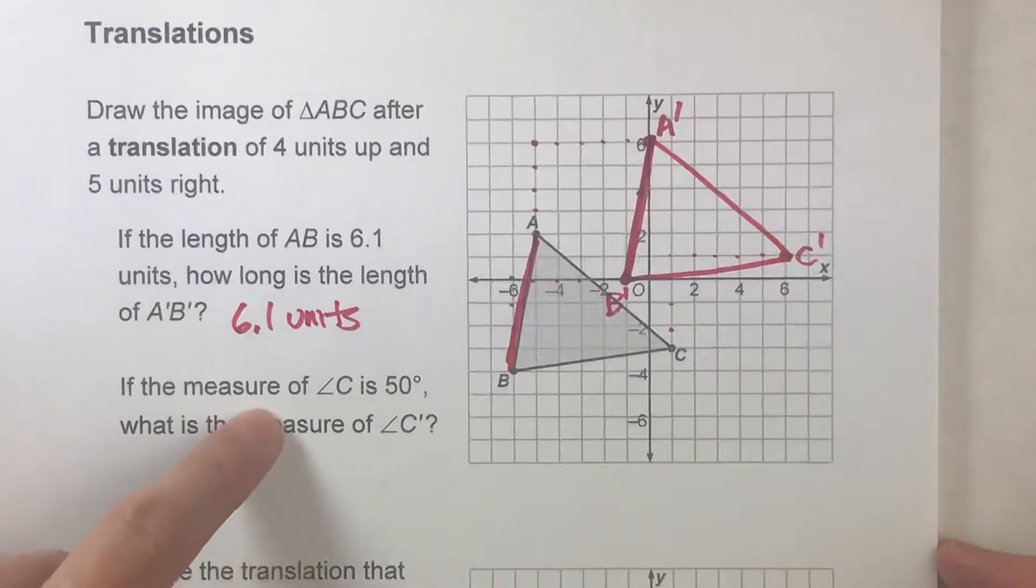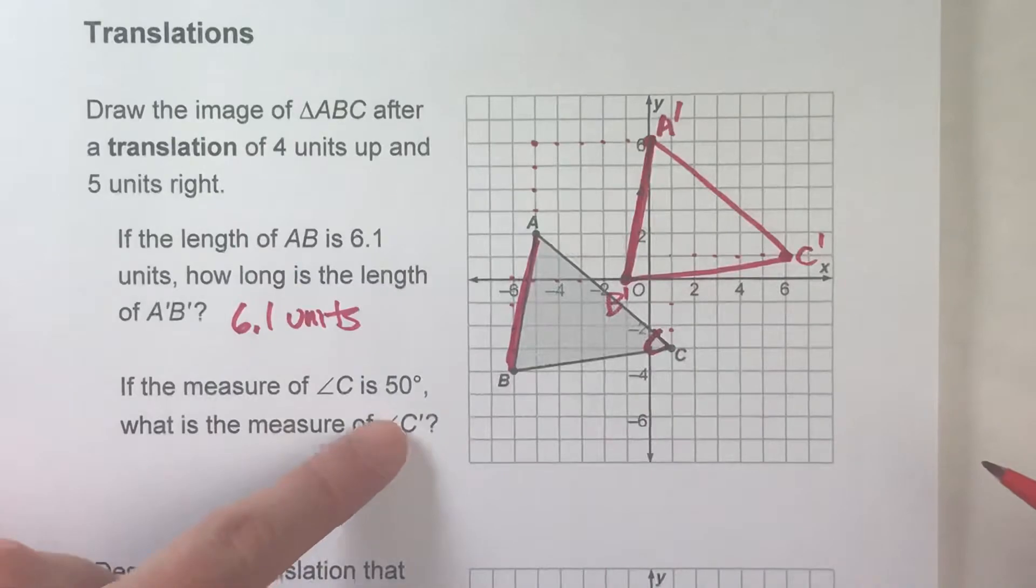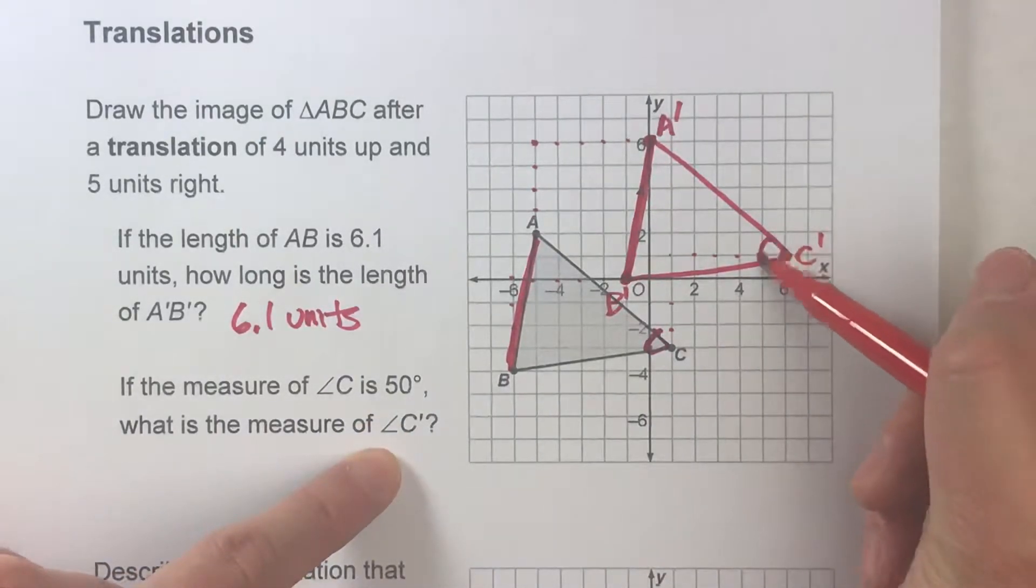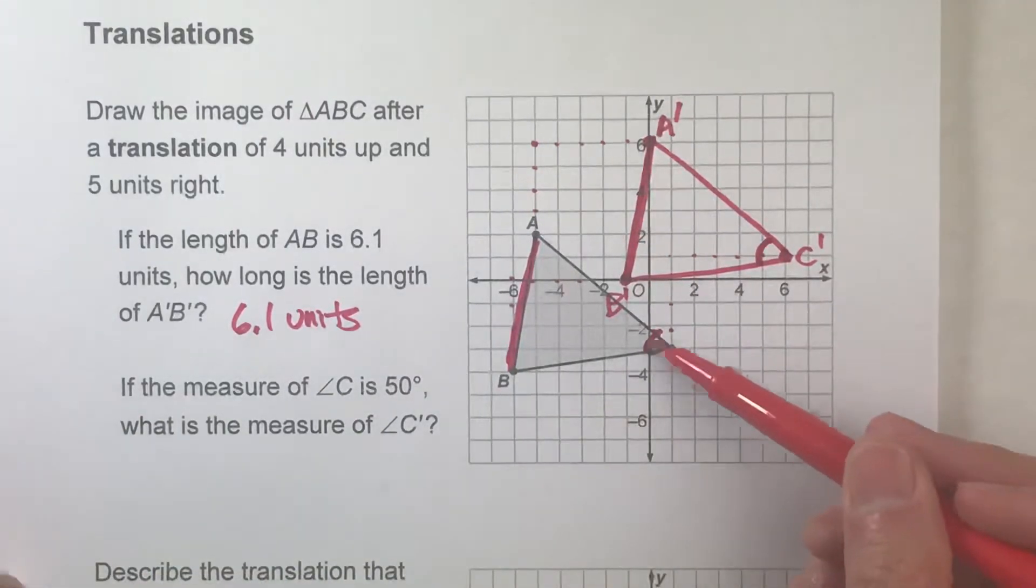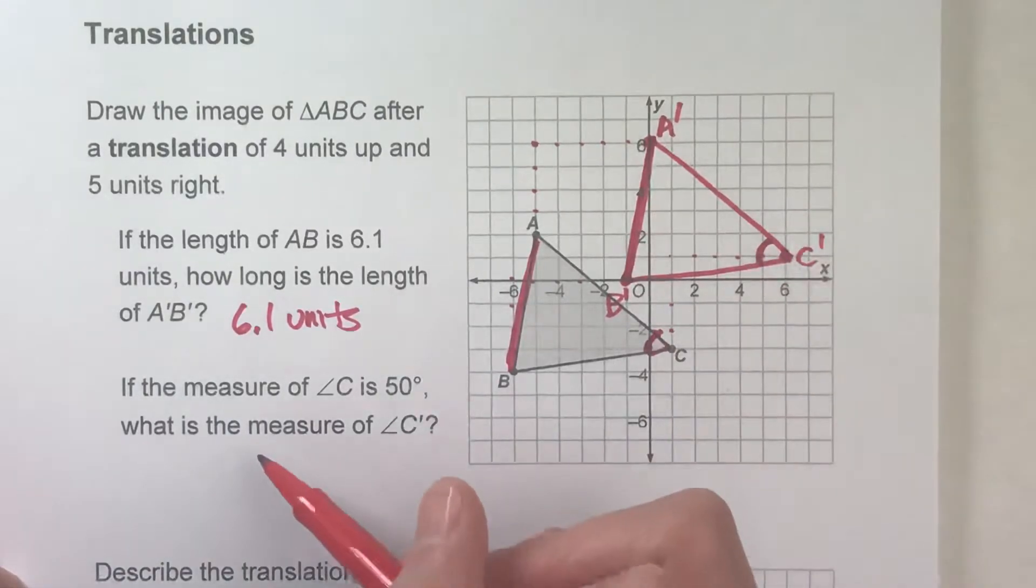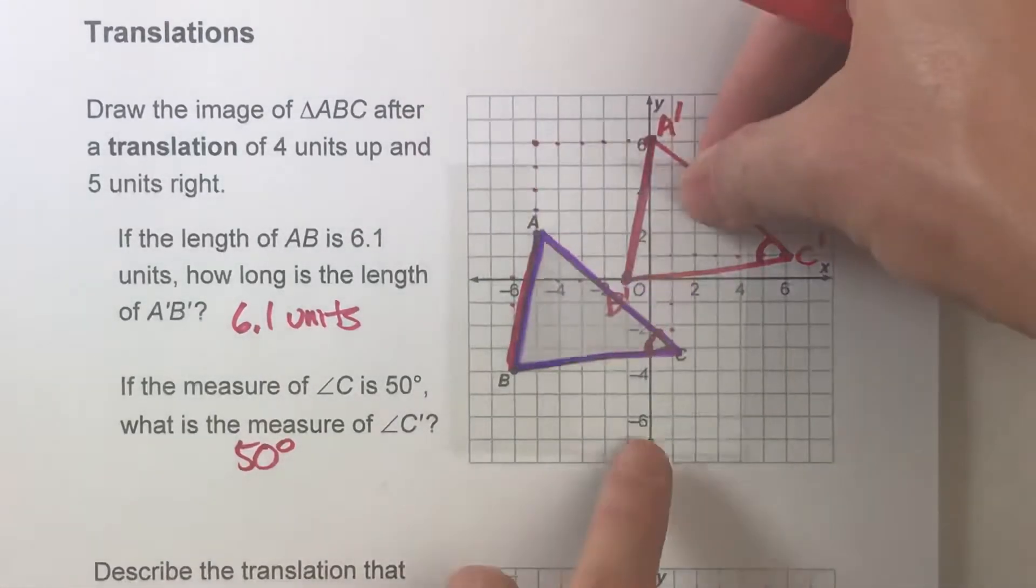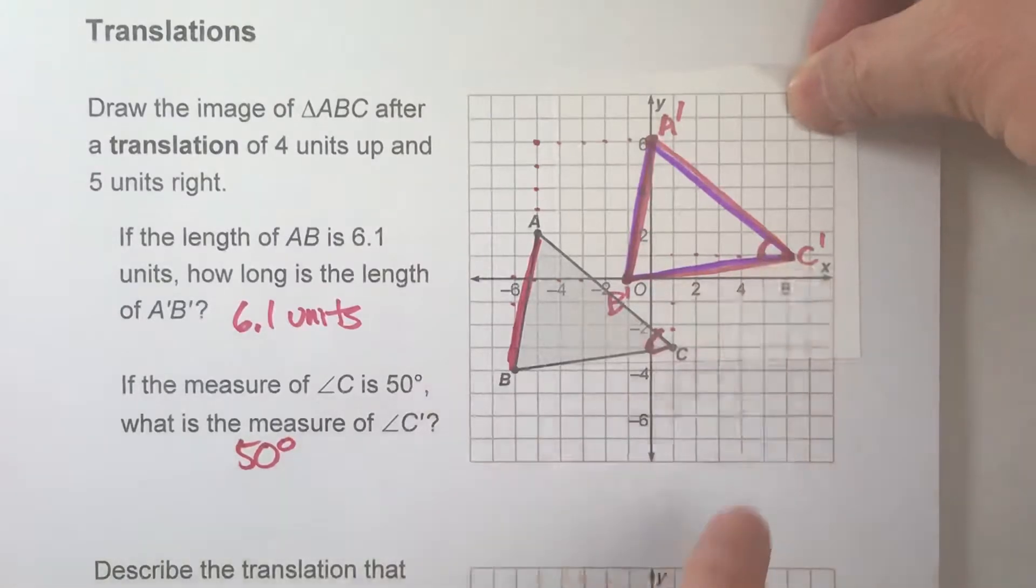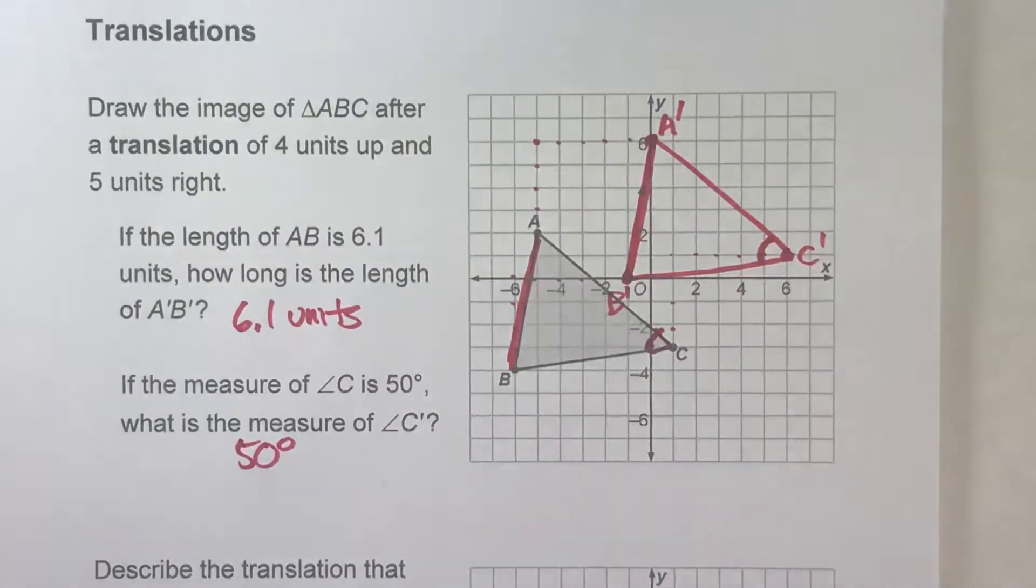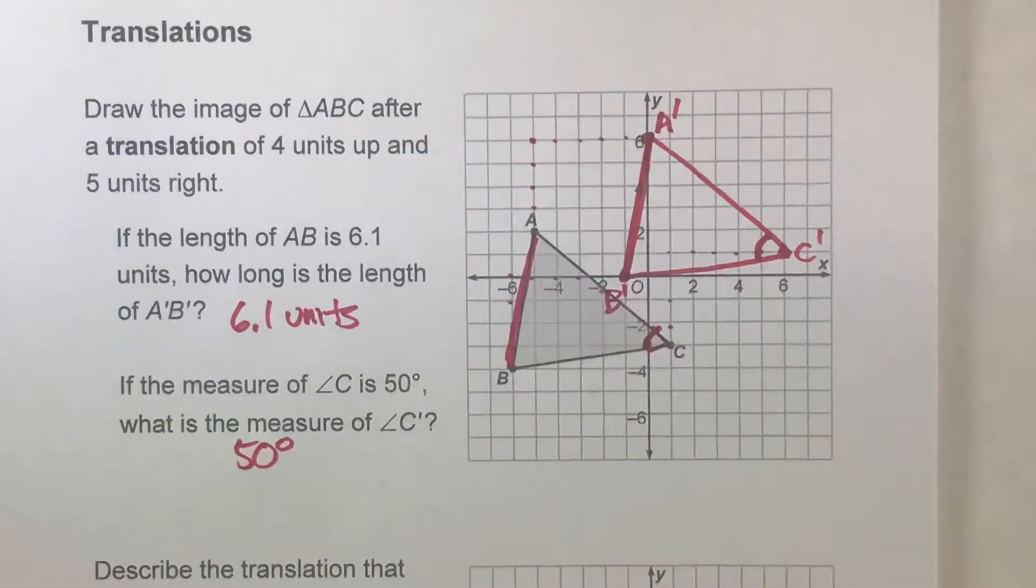Similarly, if the measure of angle C, so that's this angle right here, is 50 degrees, what's the measure of angle C prime? That's this angle right here. And again, these are congruent triangles. So this angle here should be the exact same as this angle right there. So it should also be 50 degrees because remember, this angle here is exactly the same as this angle right there. So knowing that the triangles are congruent because you just slid it over helps you answer these two questions pretty easily.